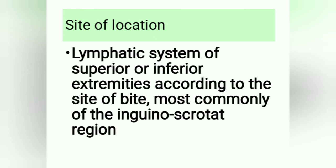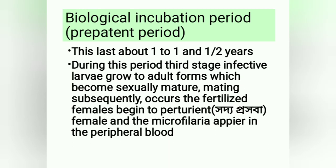Site of location: lymphatic system of the superior or inferior extremities, according to the site of bite — most commonly the inguino-scrotal region. Biological incubation period (pre-patent period): lasts about one to one and a half years. During this period, third-stage infective larvae grow to adult forms, become sexually mature, mating occurs, and fertilized females begin parturition; microfilaria then appear in the peripheral blood.